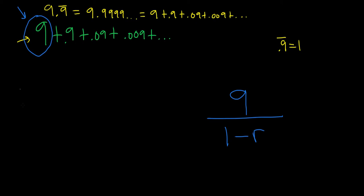So to find r, what you do is you take any of these numbers, and then you divide by the one before it. So let's take this one, and then just divide by 9. So we have 0.9 divided by 9.